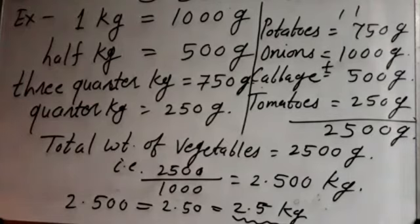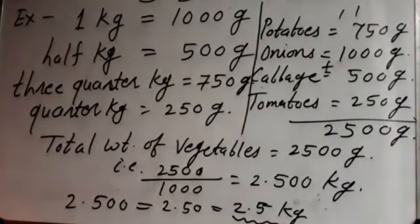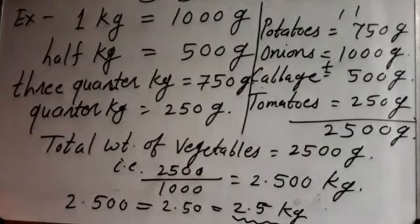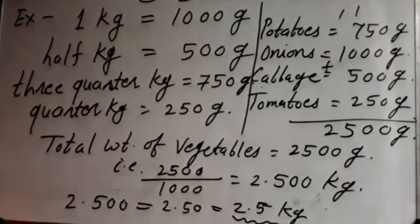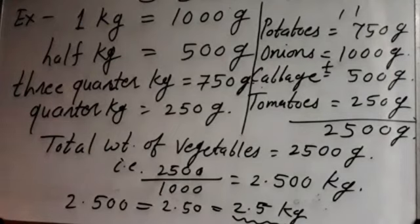So, you have to write this second example also in your notebook — that is on page number 29. From there, start with 'Reshma got some vegetables.' That is the example, and this is the solution. Copy this answer as it is in your notebook. As we go ahead, you will understand all the conversions: kilogram to gram, kilometer to meter, and liter to milliliter. This was just a revision — let's copy this example in the notebook.